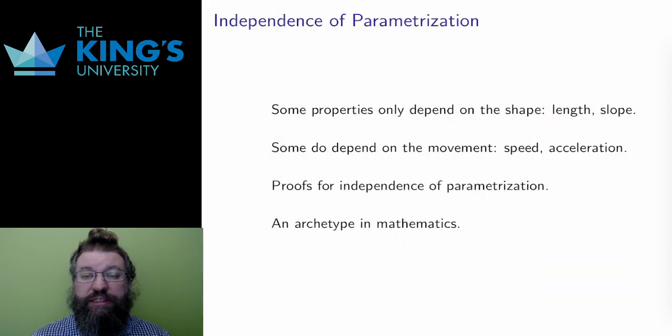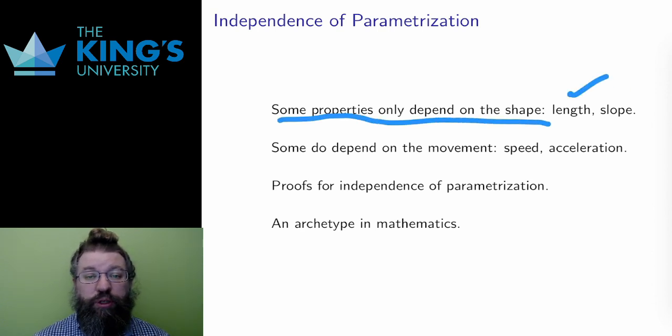The example of the circle brings up a very important theme. A parametric curve describes both a shape and a movement along that shape. There are some pieces of the description that are only about the shape, and some that are explicitly about the movement. I need to tell the difference between the two.